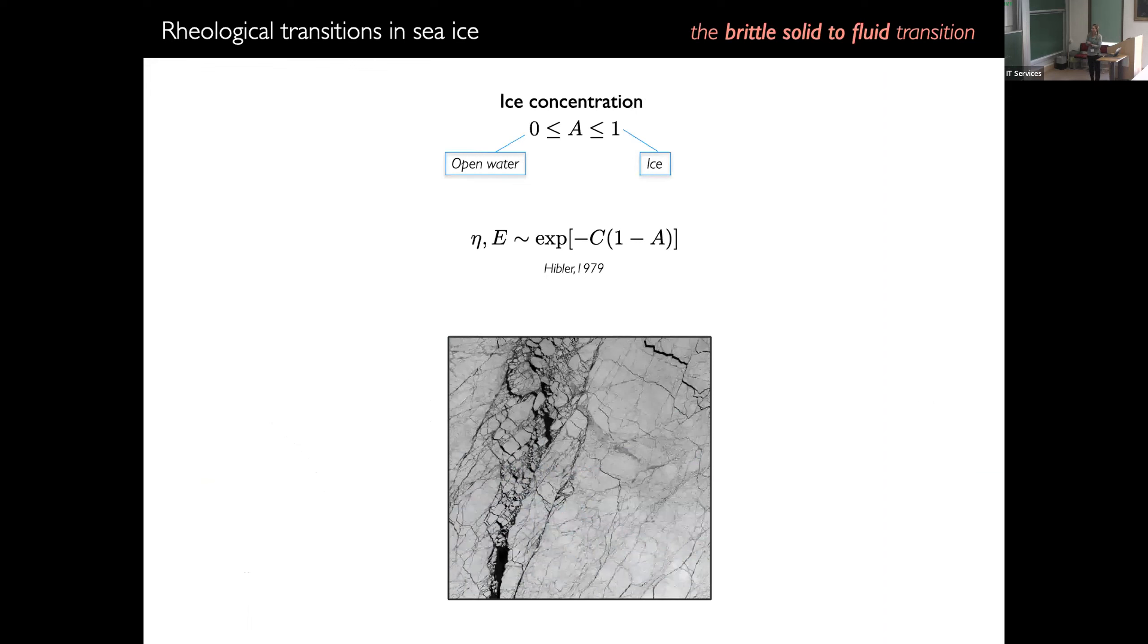We also have a coupling to the ice concentration, which follows, for the moment, this expression that was given by Hibler in 1979. It goes almost the same way as damage. So it means that where the ice concentration is of almost 100%, you're almost quasi-elastic. But when the ice concentration drops, like here, then your material can actually start to flow.